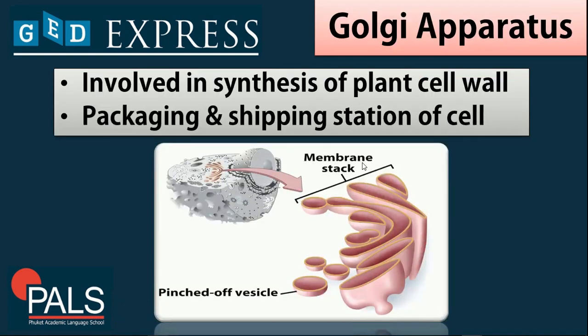Next we have the Golgi apparatus. It is involved in the synthesis of plant cell wall components and is used as the packaging and shipping station of a cell, specifically when carrying proteins. This organelle is available in both animal and plant cells.